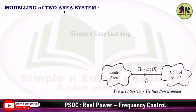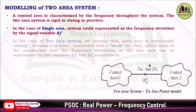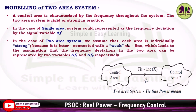Now we will see the modeling of a two-area system. Consider the two-area system with the tie-line power flow model. A control area is characterized by the frequency throughout the system, and the two-area system is rigid or strong in practice. In the case of a single area, the system represents frequency deviation by a single variable Δf. In a two-area system, we assume each area is individually strong because it is interconnected with a weak tie line, leading to the assumption that frequency deviations are represented by two variables, Δf1 and Δf2 respectively.